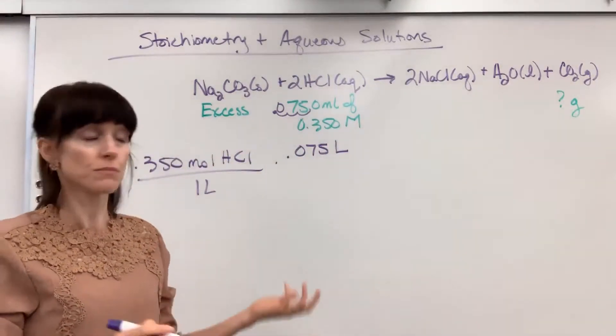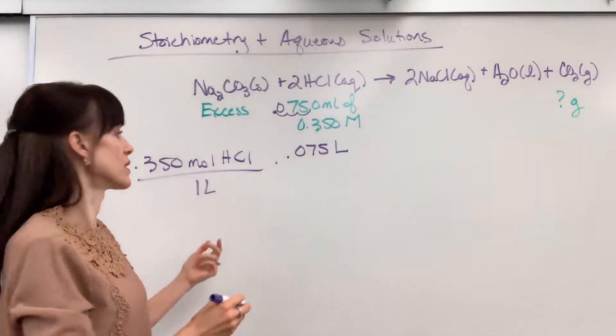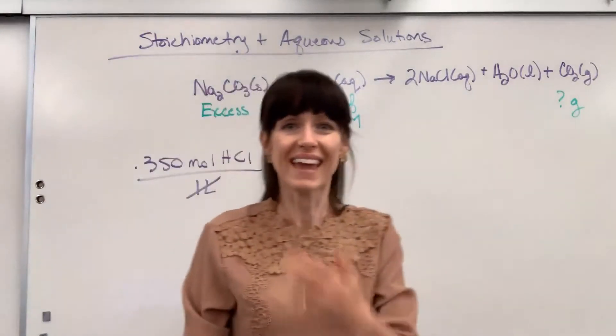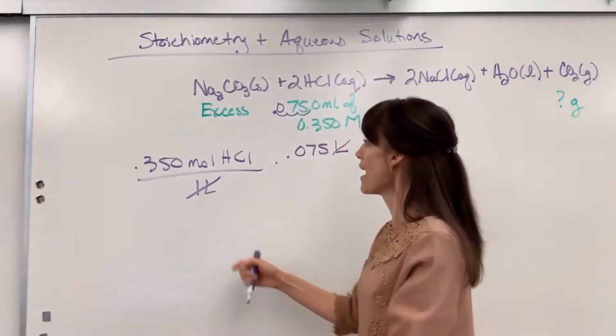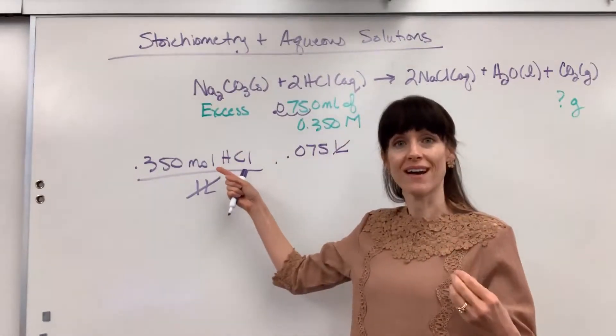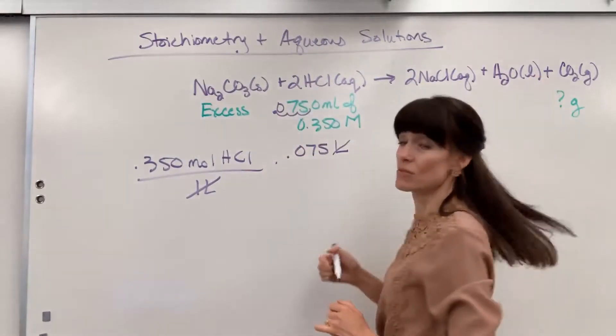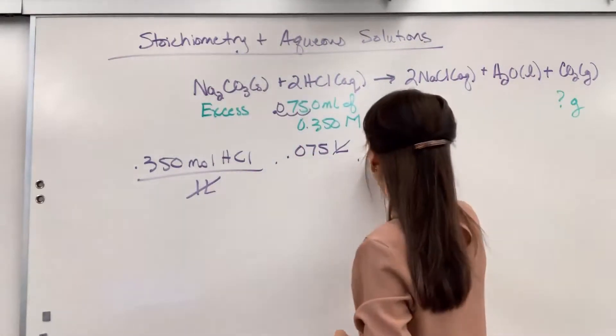I have that many liters of this 0.35 molar. So liters when I multiply, woohoo, it cancels out. And look what I have, moles of HCl. So now I can walk the bridge. I can go from moles of HCl to moles of CO2. Let's do it.